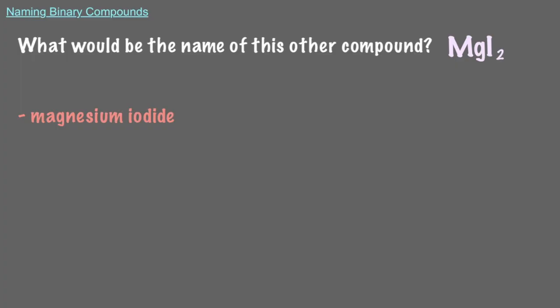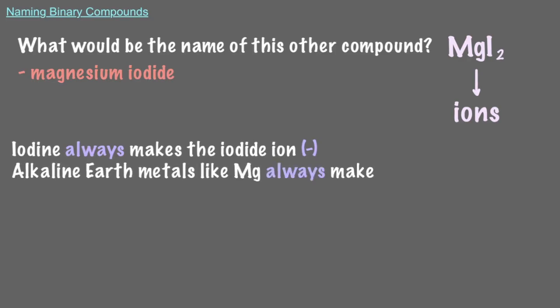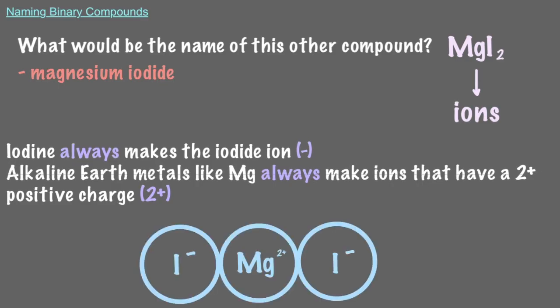Why you ask? That's a really great question. It's because the atoms in these compounds are actual ions, and these elements make very specific ions. Iodine always makes the iodide ion, which always has a single negative charge. Alkaline earth metals like magnesium always make ions that have a 2 plus positive charge. So the neutral ionic compound made from magnesium and iodide will always have 1 magnesium 2 plus ion, and 2 iodide 1 minus ions, magnesium iodide.